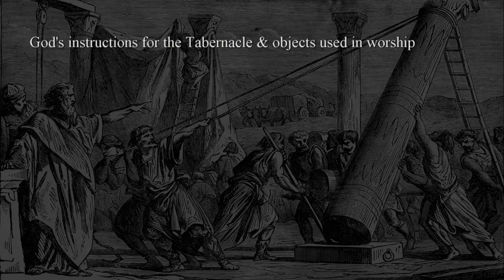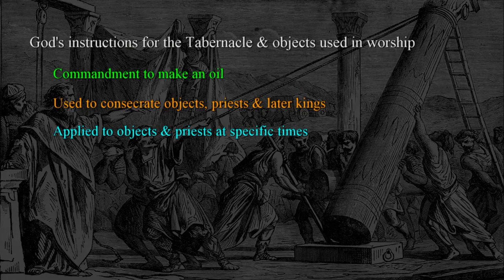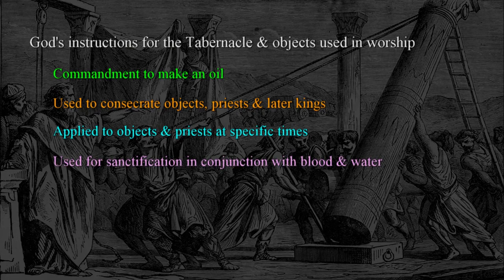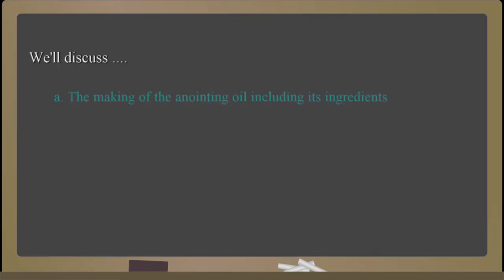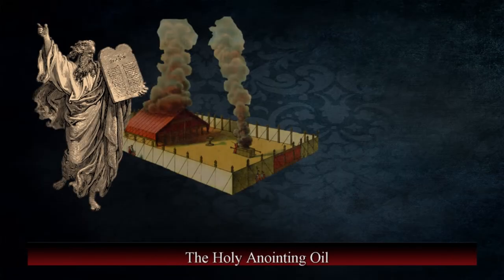The idea of anointing kings, however, originated long before that in the history of Israel. As God gave instructions for the tabernacle, he commanded Moses to make an oil that was reserved and used to consecrate objects, priests, and later kings for service to the Lord. In this study we'll discuss the making of the anointing oil, including its ingredients, usage, restrictions imposed, and the figurative significance of the oil.